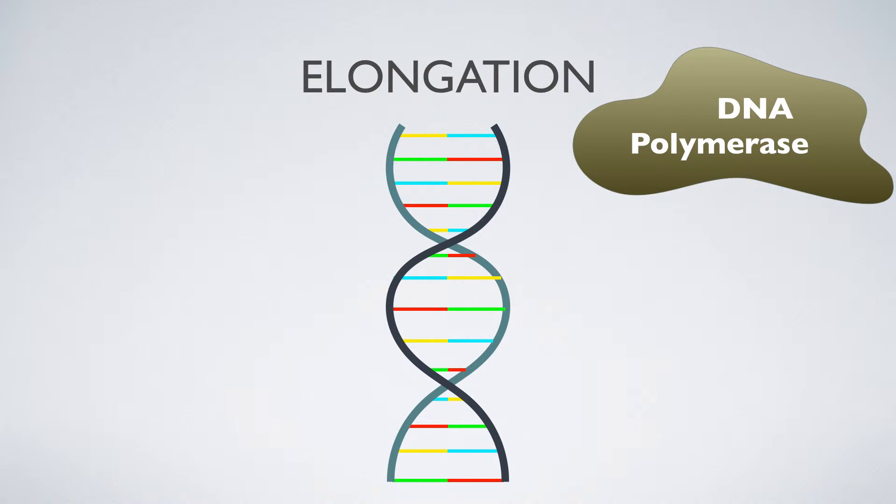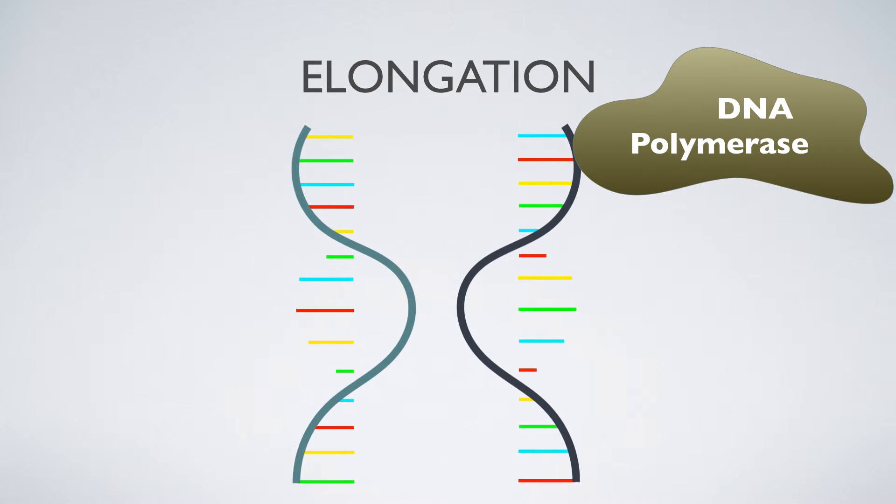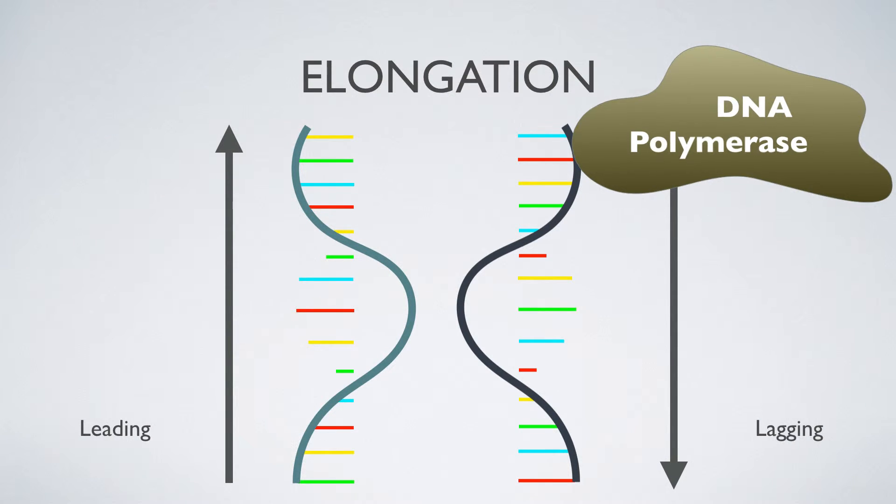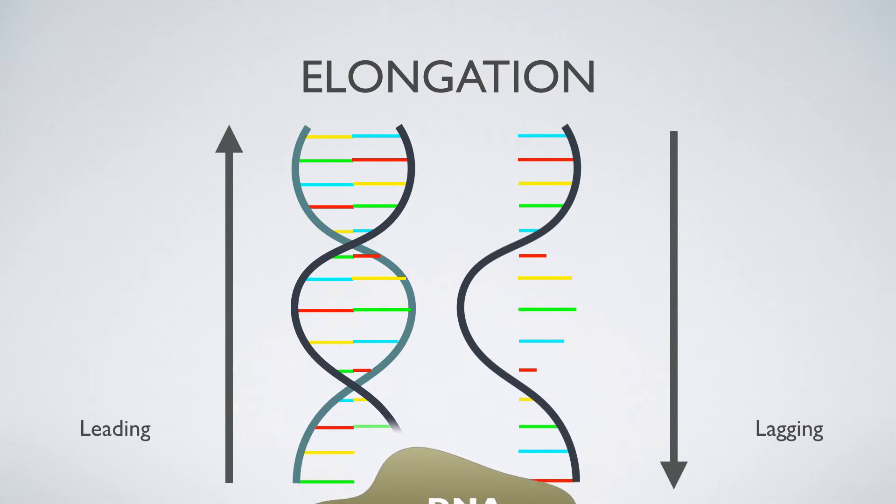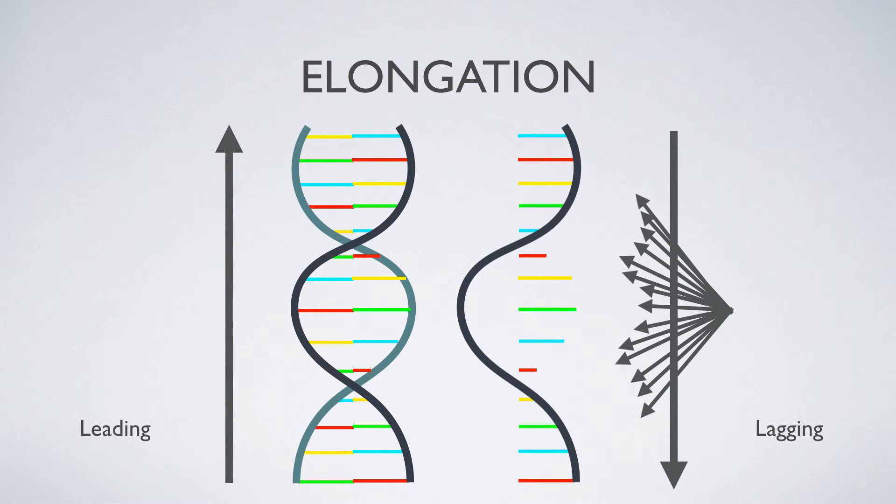Replication occurs in two directions, leading and lagging. The leading direction is being followed by DNA polymerase to copy and mirror all strands, while the lagging direction is the replicated strand. The lagging strand unwinds into small parts called Okazaki fragments.